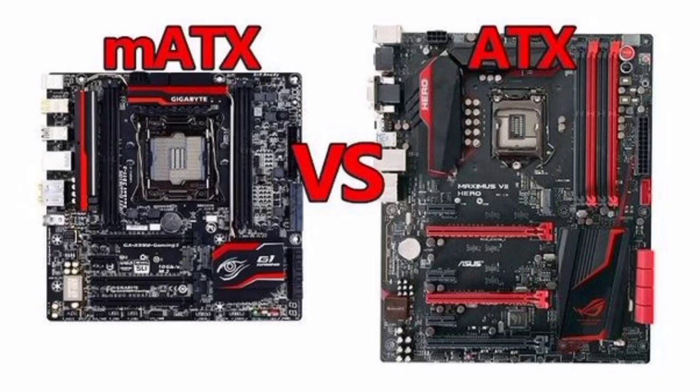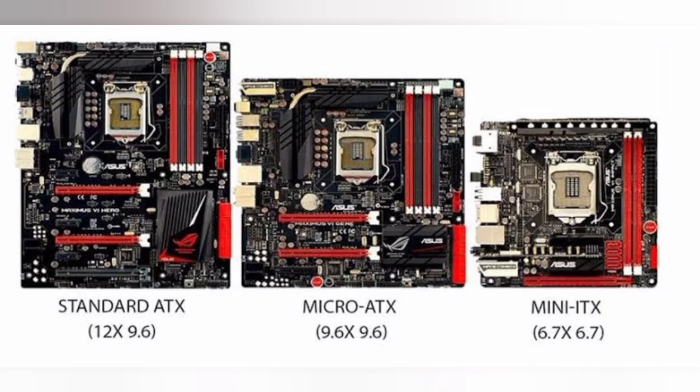ATX vs micro ATX — what's the difference between them? First, we have to look at what ATX is. ATX is short for Advanced Technology Extended, which is the most common motherboard design. The ATX motherboard was developed by Intel in 1995 to improve previous de facto standards such as the AT design. The full size of the ATX motherboard is 12 by 9.6 inches, that is 305 by 244 millimeters.